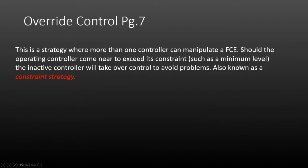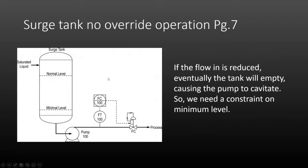Override control is another safety-oriented strategy where more than one controller manipulates the final control element. Should the operating controller come near to exceeding its constraint — which can be any type of limit or situation we don't want to encounter, such as a minimum level — the inactive controller will take over to avoid problems. We call override strategies sometimes constraint strategies.